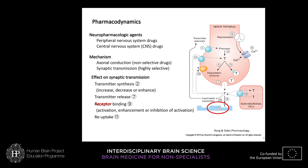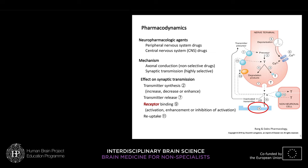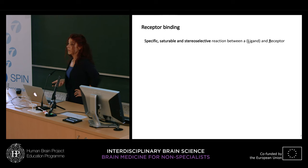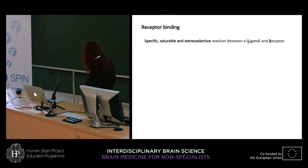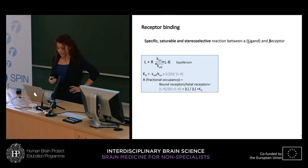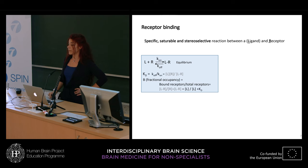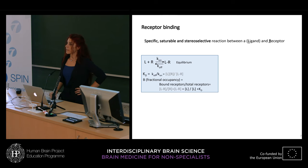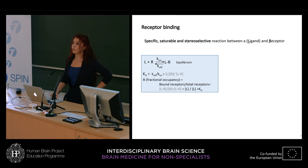Receptor binding is a chemical reaction that is specific, saturable, and stereoselective — a reaction between a ligand and receptor described by the law of mass action, where a ligand binds a receptor until reaching equilibrium with the formation of the ligand-receptor complex, characterized by the K-on and K-off rate constants. This model is a bit reductionist, assuming all receptors are in the same conformation and that the ligand is not degraded during the reaction.